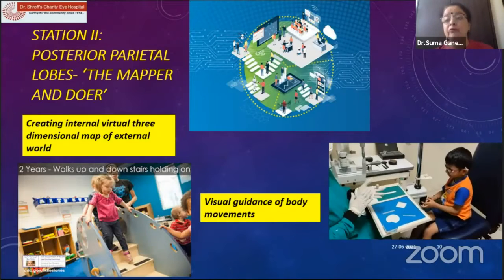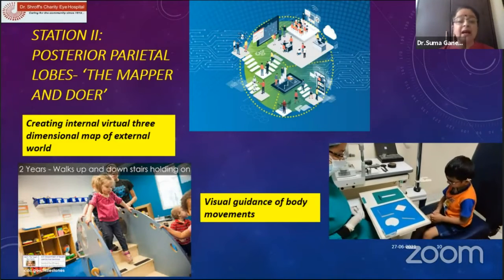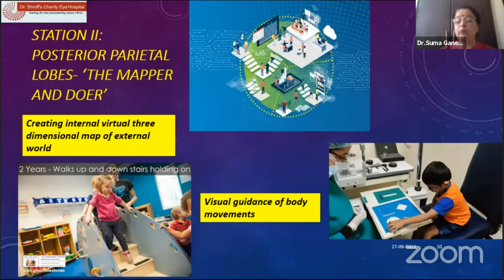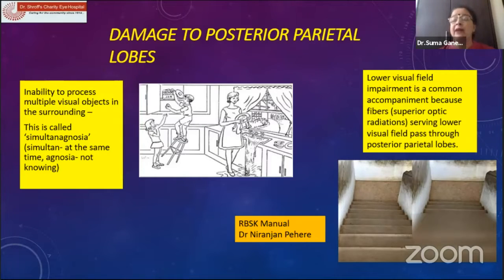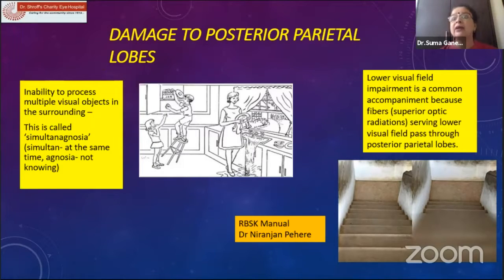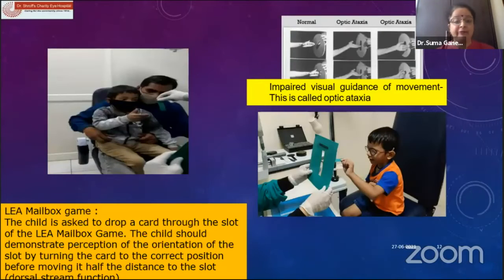These are the problems parents come and tell us about. Damage to the posterior parietal lobes also causes simultanagnosia — meaning the child can pay attention to only one object at a time. If there is a lot of cluttering or crowding, they cannot place themselves among those objects and get confused. Even the inferior visual field is affected — imagine climbing down steps or walking on the road, how difficult that may be for the child.